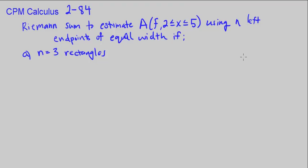This is CPM Calculus Chapter 2, number 84. Here we're asked to write a Riemann sum for a general function f of x — so this is just anything could be f of x — to estimate the area under the curve of f bound by the curve and our x-axis between 2 and 5.